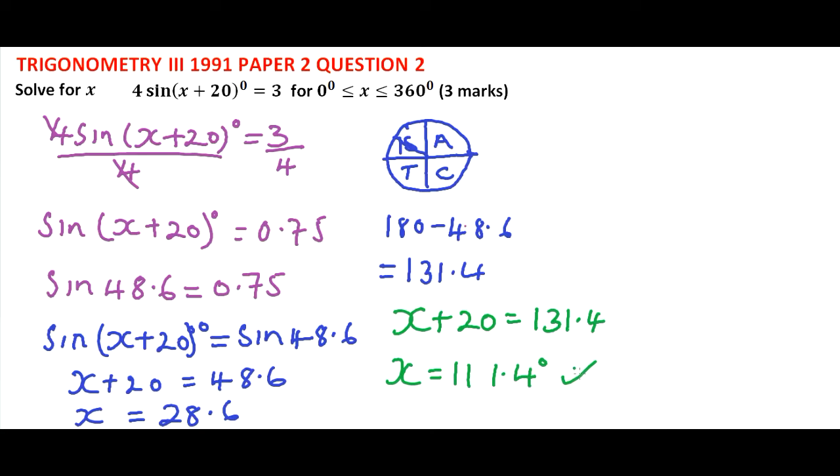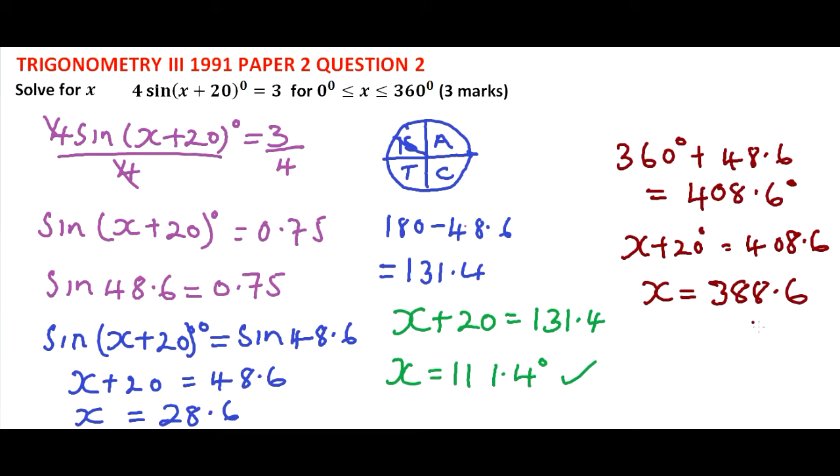We will try and get another angle. We can say it is 360 degrees plus 48.6. This will give you 408.6 degrees. If we say that x plus 20 equals 408.6, we subtract 20 from both sides. We will get x equals 388.6, which is beyond 360. Therefore, that angle does not apply.